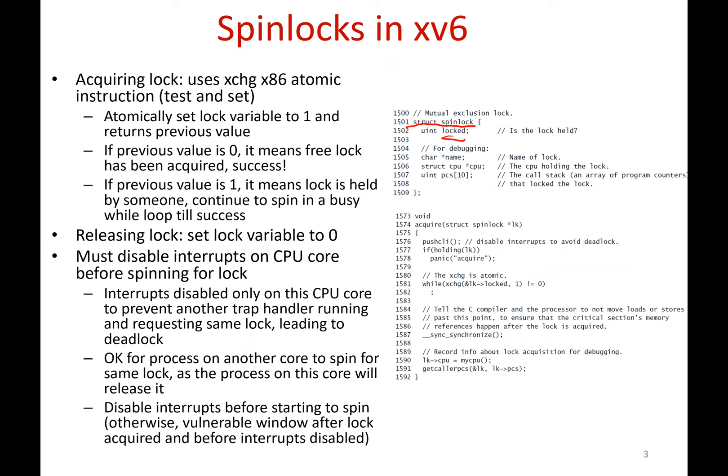So how do you acquire a lock in xv6? We have seen in a previous lecture on locking that locks are implemented using hardware atomic instructions. In xv6, the exchange instruction is used, which is very similar to the test-and-set instruction. This exchange instruction tries to set the `locked` variable to 1 and returns the previous value.